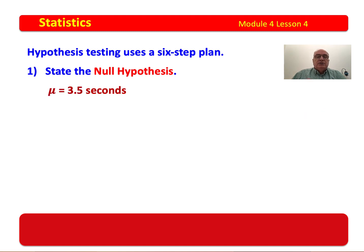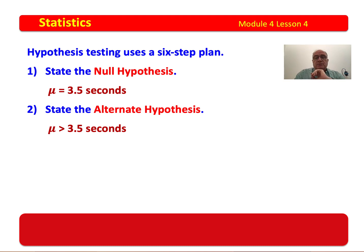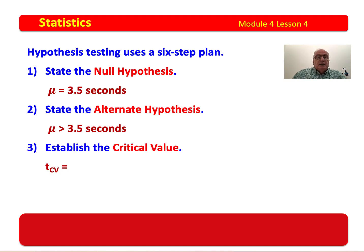Your null hypothesis is mu equals 3.5. The alternate hypothesis is mu is greater than 3.5, because you believe 3.5 is too low. You then establish the critical value.